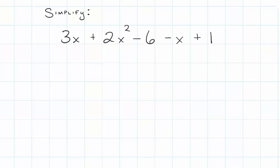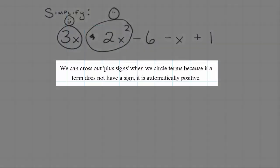We're gonna circle our terms. I have a 3x that is positive. I have a 2x squared which is also positive and I can cross out that plus sign.